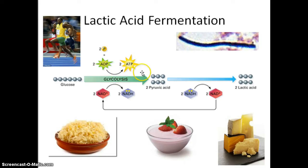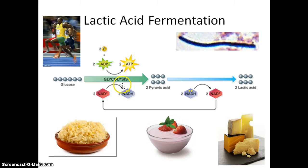The last part, the ETC, directly requires oxygen, and because of that, the Krebs cycle also requires oxygen. Glycolysis is the only energy-producing part of cellular respiration that does not directly require oxygen. So these anaerobic organisms will be working with a modified glycolysis pathway.